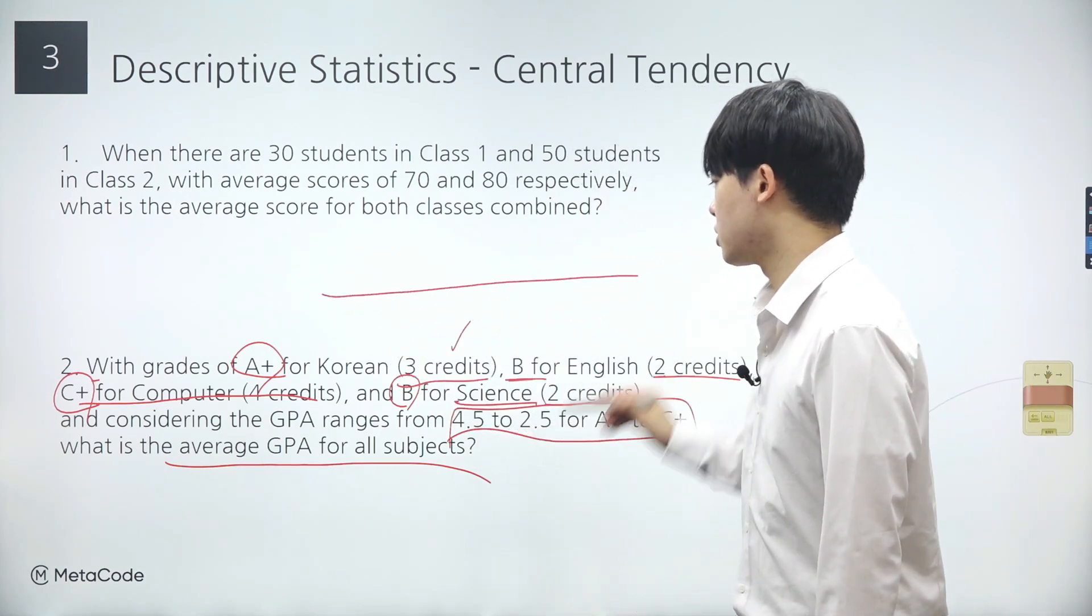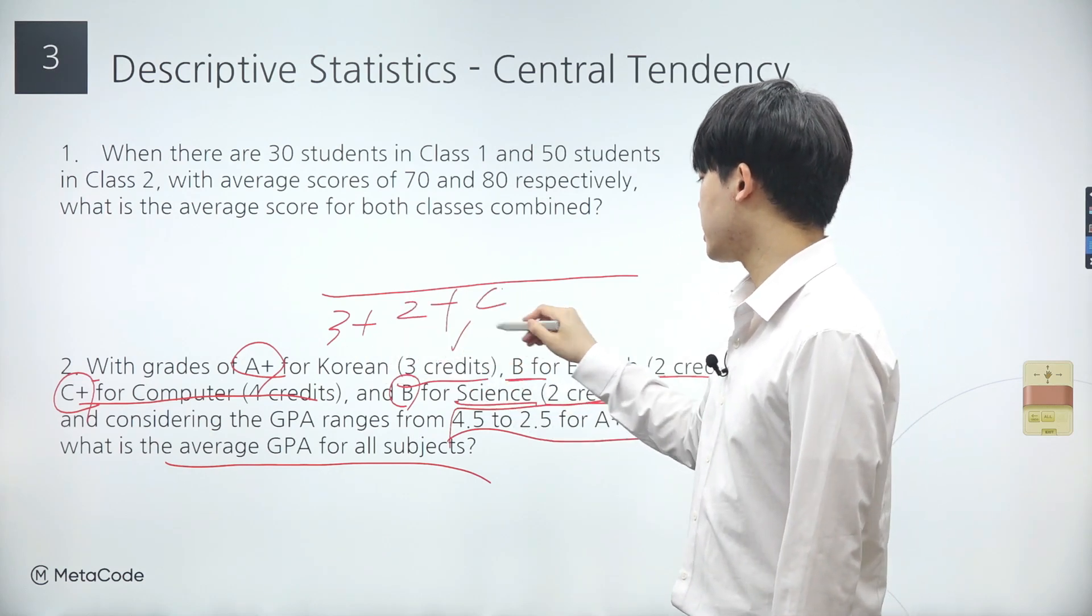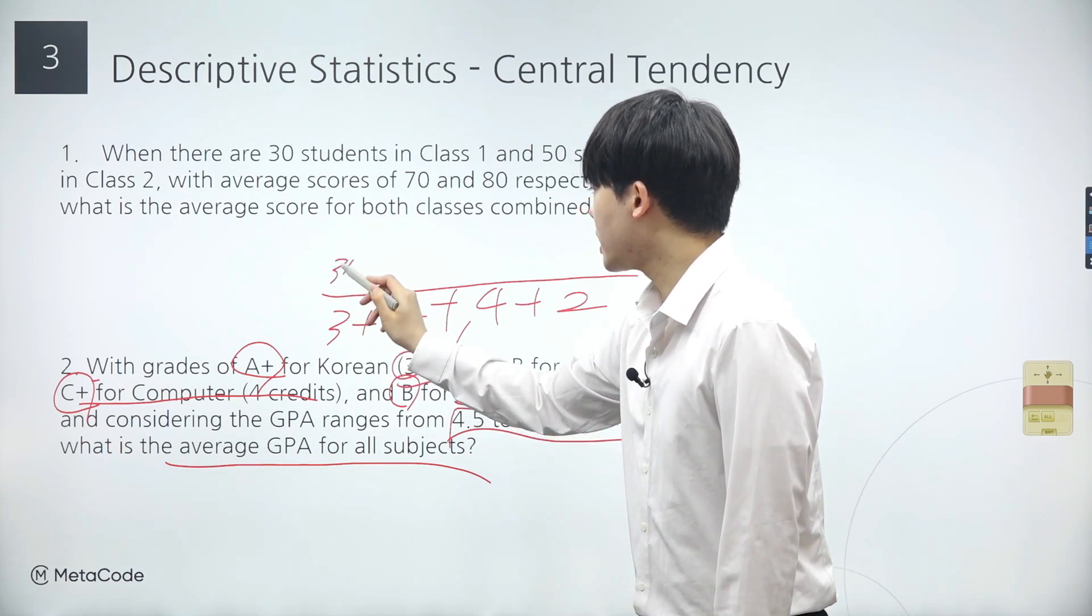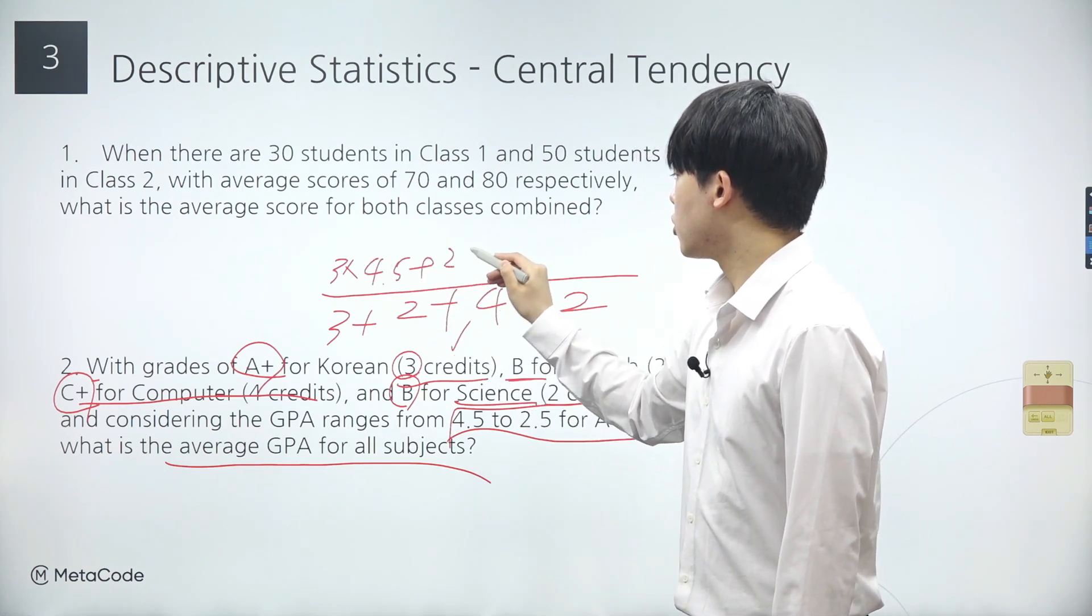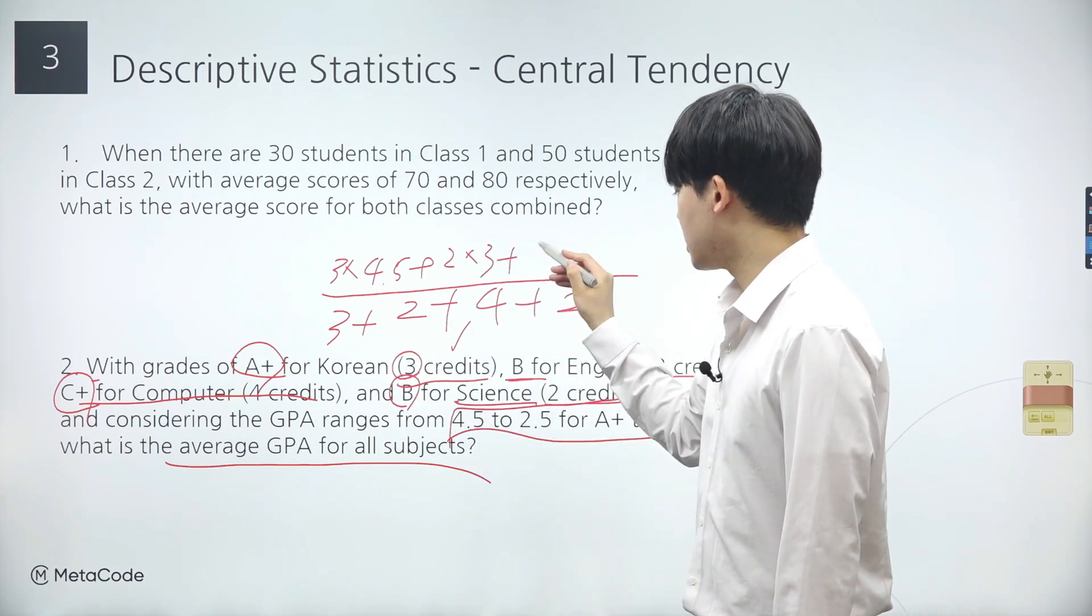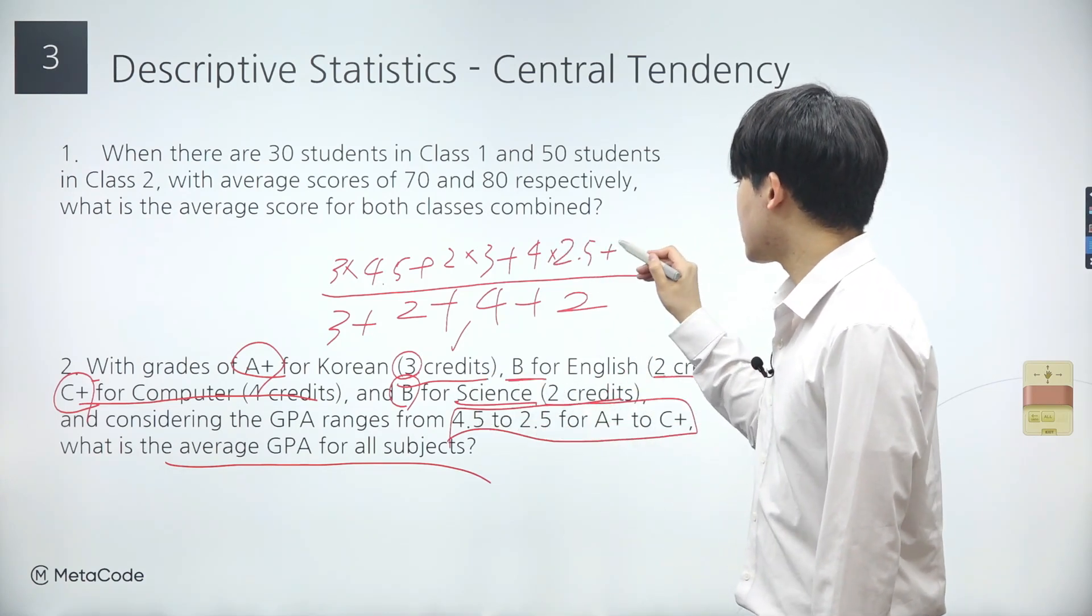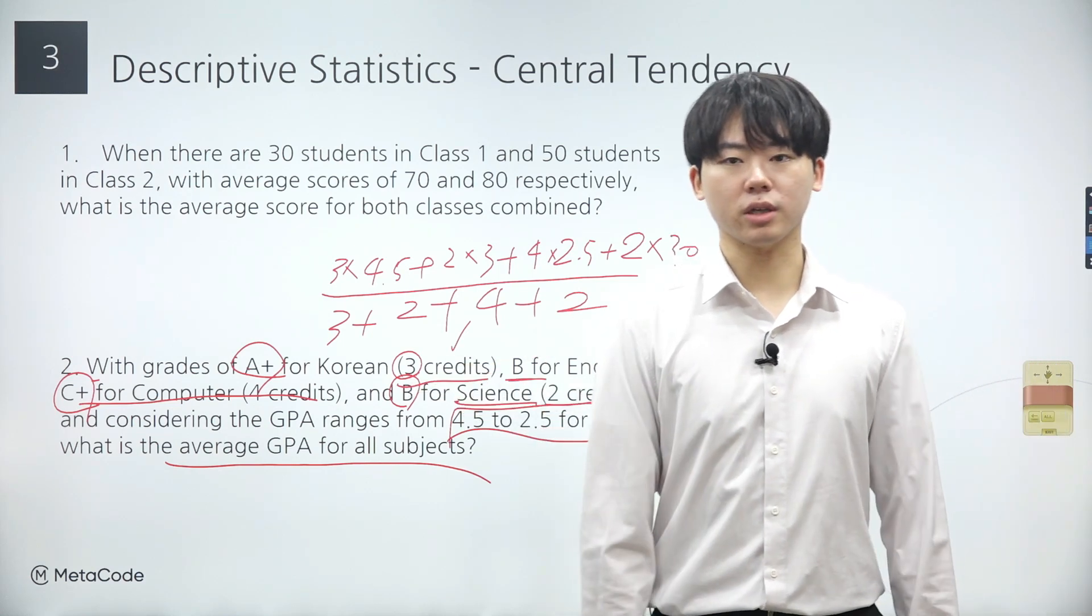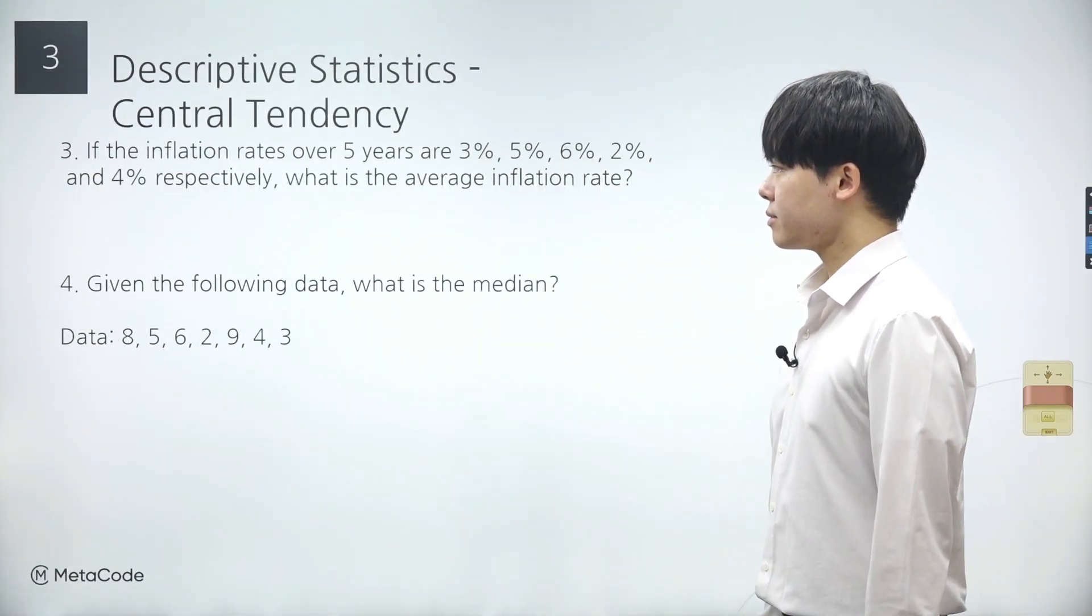Thus, the denominator is the sum of 3 for Korean class, 2 for English class, 4 for computer class, and lastly 2 for science class. The numerator is calculated as 3 times 4.5 for an A plus, plus 2 times 3 for a B, plus 4 times 2.5 for a C plus, plus 2 times 3 for a B. We can then calculate the weighted mean using the numerator and the denominator. We'll skip the actual calculation once again.